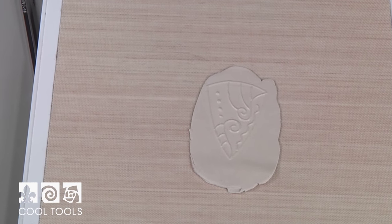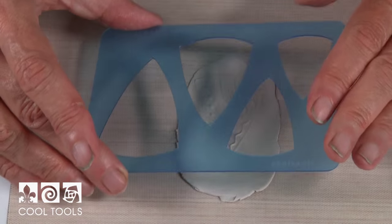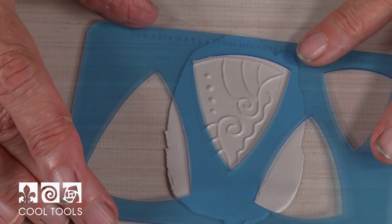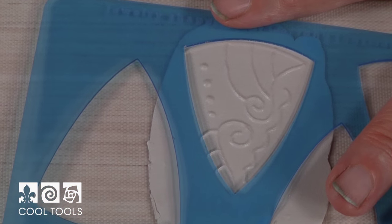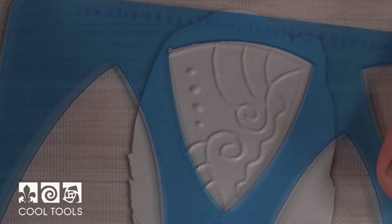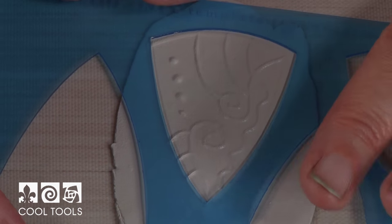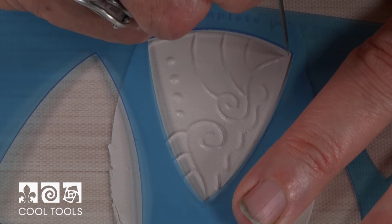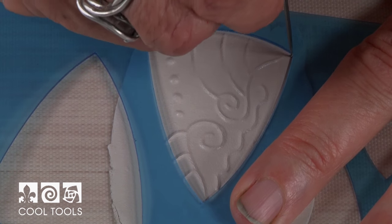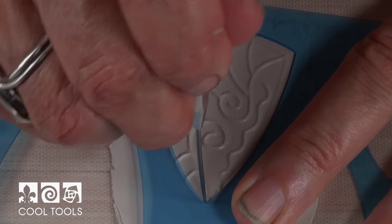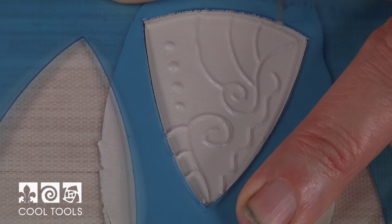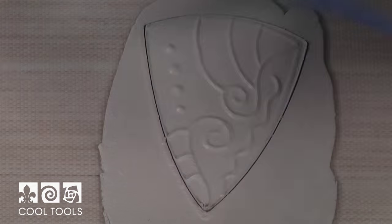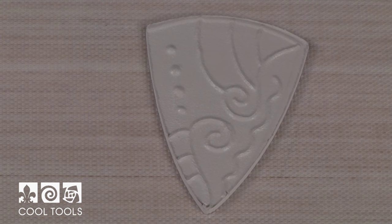The final step is to take my original template that I used to create the design, line it up, and use the ultimate clay pick, which Cool Tools created. It's one of my favorite metal clay tools of all time. Hold it perpendicular and just cut out my design. Sometimes I'll go around twice just to be on the safe side. Pull my clay away and there's my finished design.